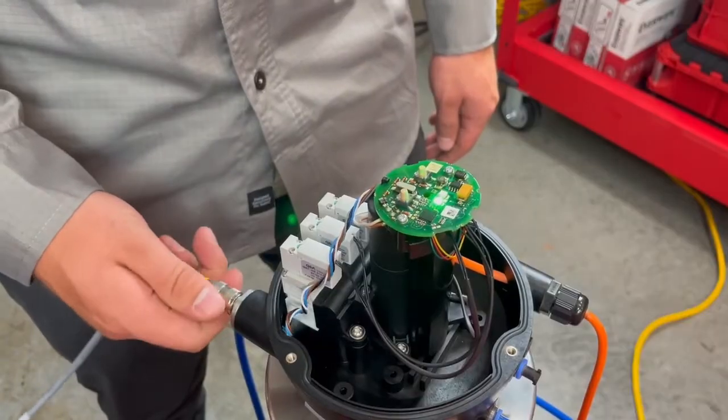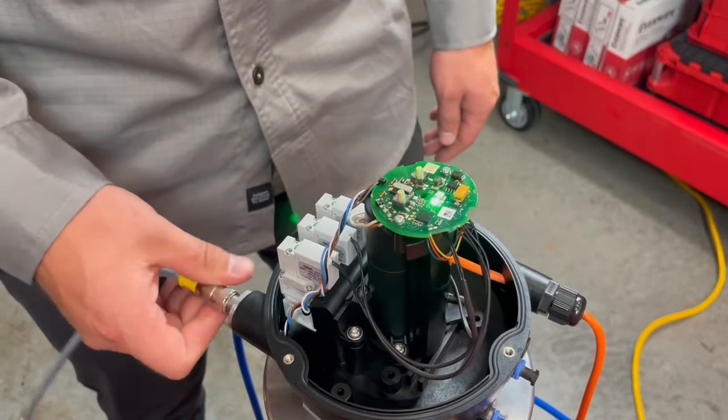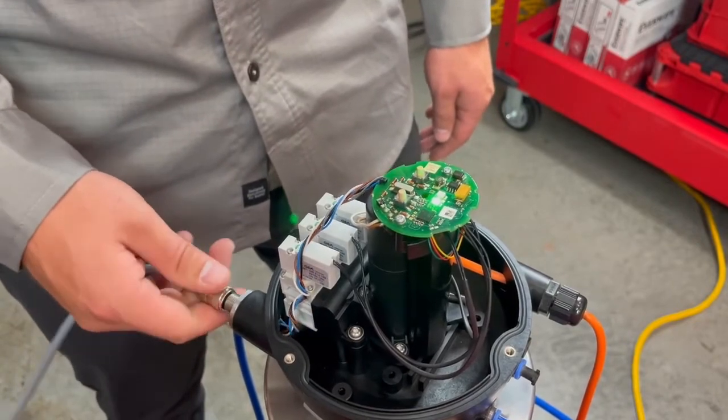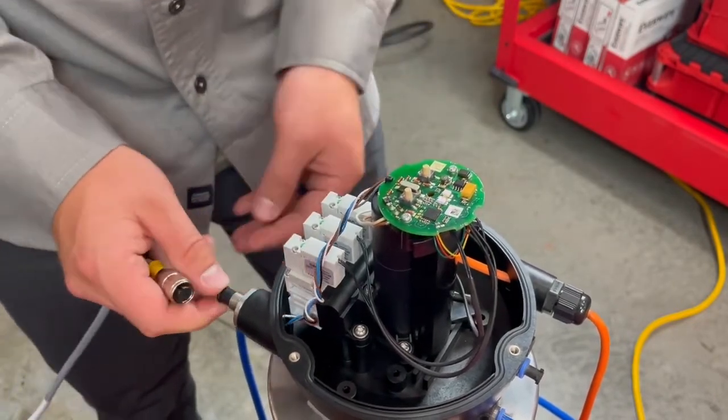To activate the calibration and configuration buttons, disconnect and then reconnect power. The buttons will lock after 30 seconds.